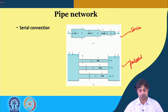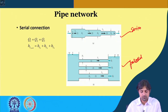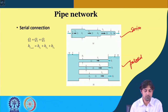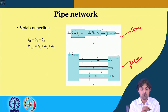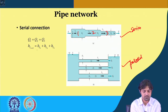In a serial connection, the discharge Q1, Q2, Q3 through each section is the same, but the total head loss is the sum of the head losses of individual sections.